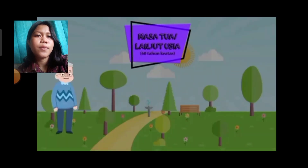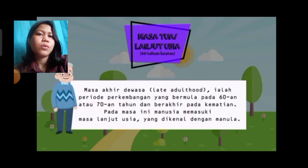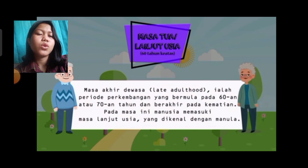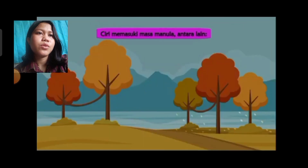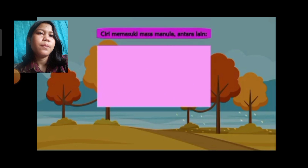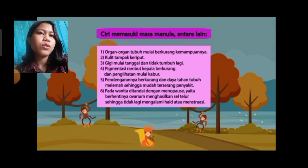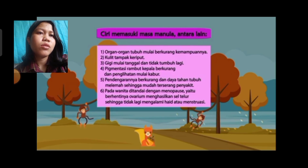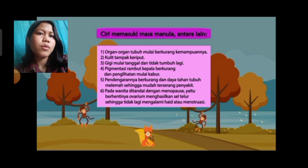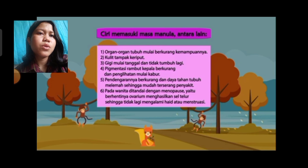Masa tua atau lanjut usia dimulai dari 60 tahun ke atas, bermula pada 60-an atau 70-an tahun dan berakhir pada kematian. Ciri-ciri memasuki masa Manula antara lain: organ-organ tubuh mulai berkurang kemampuannya, kulit tampak keriput, gigi mulai tanggal dan tidak tumbuh lagi, pigmentasi rambut kepala berkurang, penglihatan mulai kabur, pendengaran berkurang, dan daya tahan tubuh melemah sehingga mudah terserang penyakit. Pada wanita ditandai dengan menopause, yaitu berhentinya ovarium menghasilkan sel telur sehingga tidak lagi mengalami menstruasi.